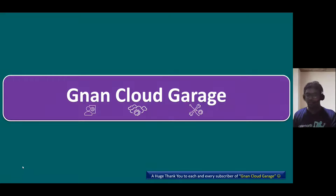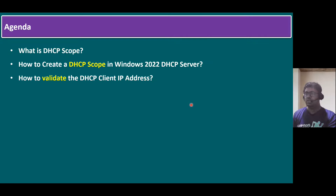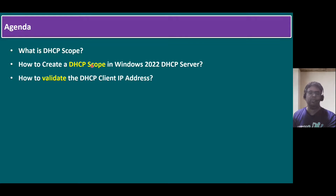Hi everyone, welcome to Gnayan Cloud Garage. In this session, I'm going to talk about how to create a DHCP scope in Windows 2022 DHCP server. So here is the agenda: before we create a DHCP scope, we can understand what is a DHCP scope, then we can create a DHCP scope in Windows 2022 DHCP server, and finally, we can validate the DHCP client IP address — whether the IP is received from within the scope or not.